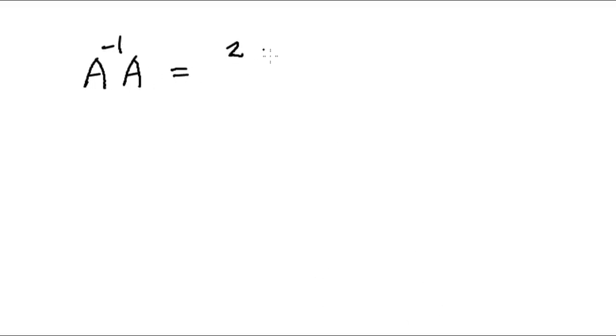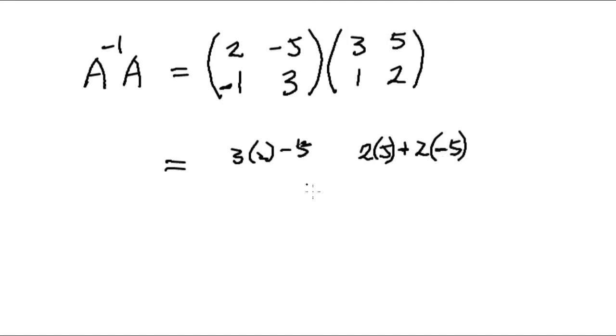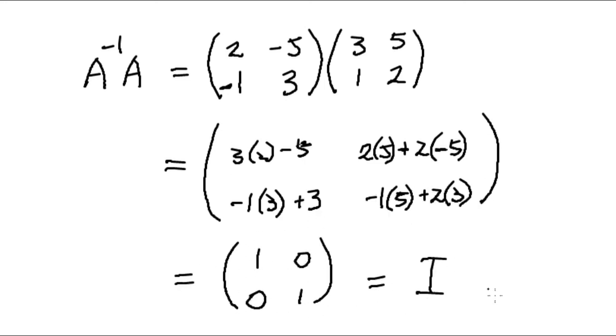To verify this, multiply matrix A with the inverse matrix A to the minus 1. And the result is the identity matrix: (1, 0; 0, 1).